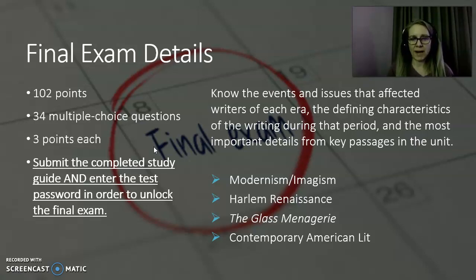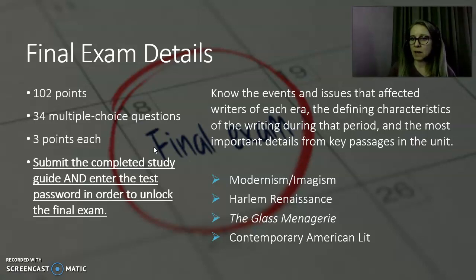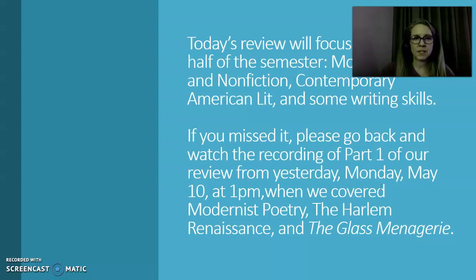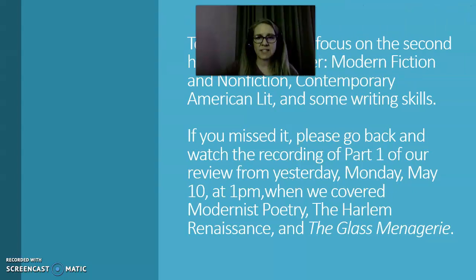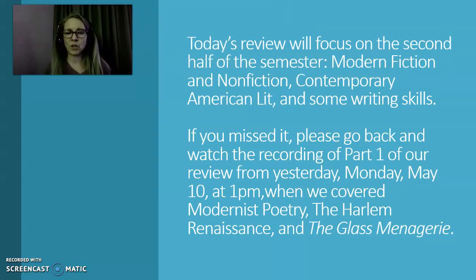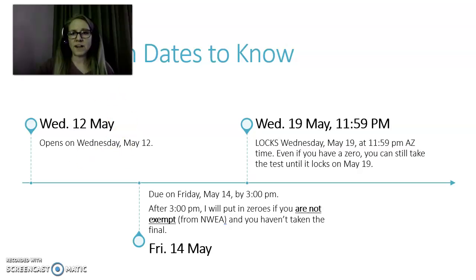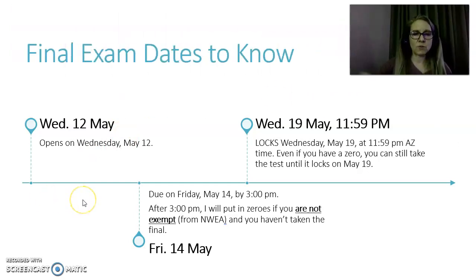It's a two-part password. You'll want to know the events and issues that affected writers of each era, the defining characteristics of the writing during that period, and the most important details from key passages. Topics covered include modernism and imagism, the Harlem Renaissance, The Glass Menagerie, and contemporary American lit. Today's review focuses on the second half of the semester. If you missed part one, please go back and watch that recording, which covered modernist poetry, the Harlem Renaissance, and The Glass Menagerie.